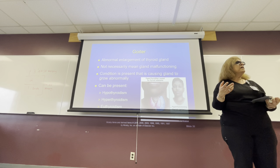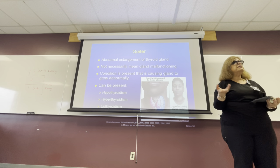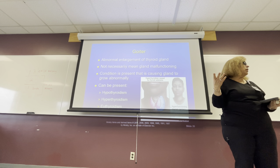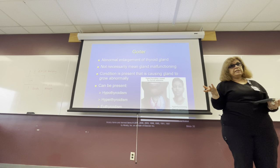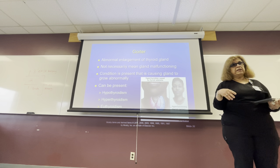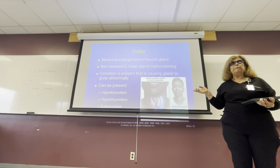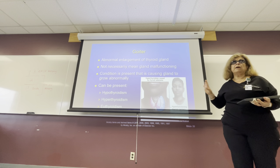The thyroid gland needs to take iodine in order to manufacture the thyroxine hormone. Where is the iodine coming naturally? Seafood. People or the tribes that were living inland don't eat seafood because they don't have access, or they don't have the money. So people were having a lot of goiters in the tribes that are inland.